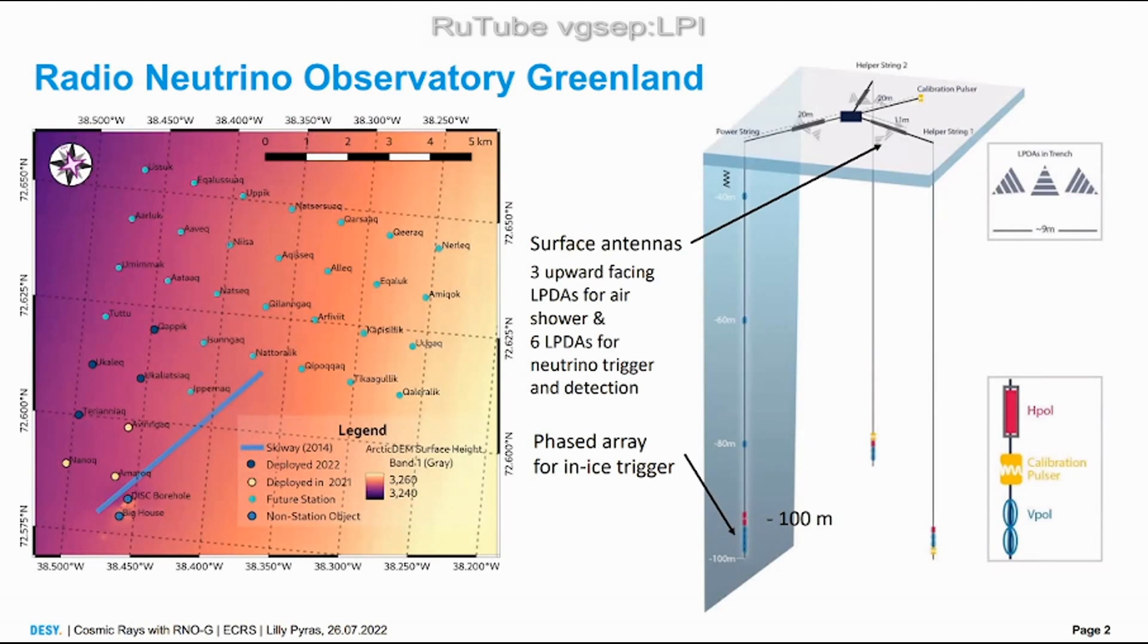Those seven here are the ones we have already built. Each of these dots stands for one station which consists of three in-ice strings down to 100 meters and nine surface antennas.